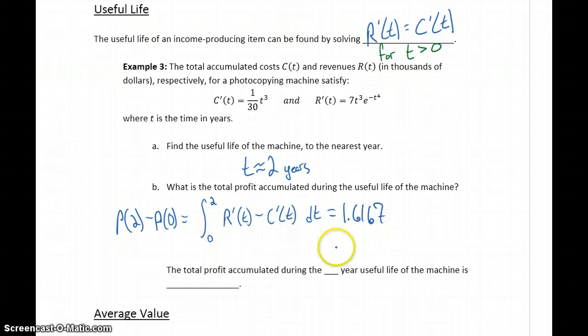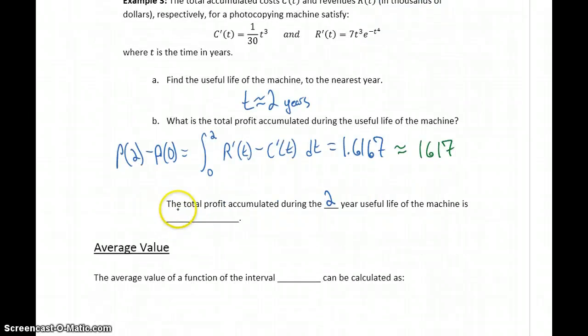The total profit accumulated during the two-year useful life of our machine is going to be 1.6167, but those values are in thousands of dollars, so really this is approximately $1,617, if we multiply this by a thousand. So total profit accumulated during that two-year period will be approximately $1,617, rounded to the nearest dollar.